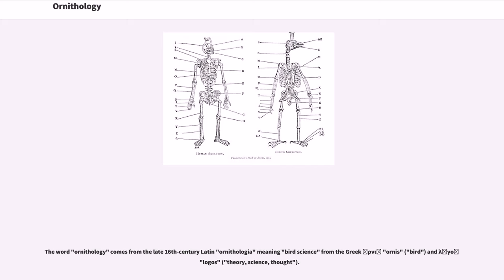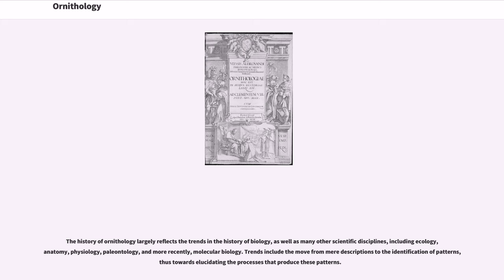The word ornithology comes from the late 16th century Latin ornithologia, meaning bird science, from the Greek ornus and logos. The history of ornithology largely reflects the trends in the history of biology, as well as many other scientific disciplines, including ecology, anatomy, physiology, paleontology, and more recently molecular biology.